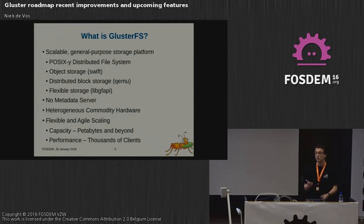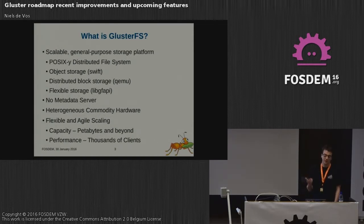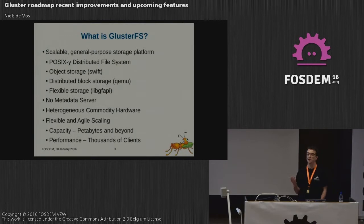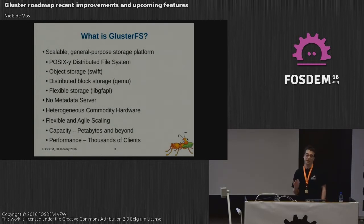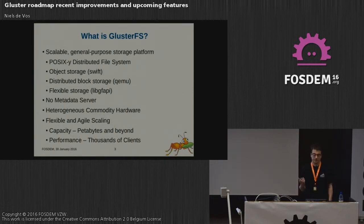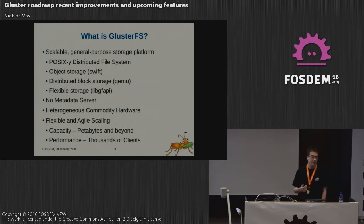We provide a FUSE daemon, which is basically a user-space process mounted to the Linux kernel FUSE environment, and this provides you with a POSIX-compliant file system. So all the applications that you already have and are already running on local file systems, you can just run them on Gluster. If you prefer object storage interfaces like S3, Swift, or similar, you can use Swift as well. Applications need to be adapted to use object storage, but enough current applications actually use Swift or similar.